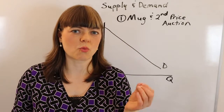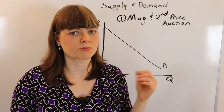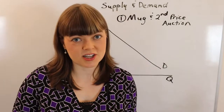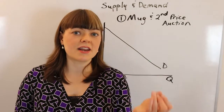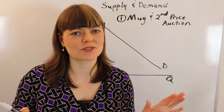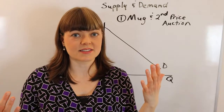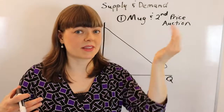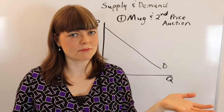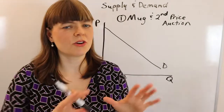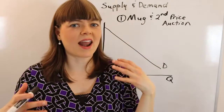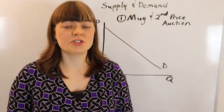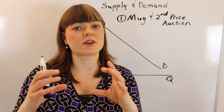You ask them to write down the highest amount they would pay for the product. To make this work, you use a second price auction — the optimal strategy is to bid your true valuation. You can even have students look that up online to verify. The person who bids the most gets the product, but they pay the bid of the person who bid the second most.